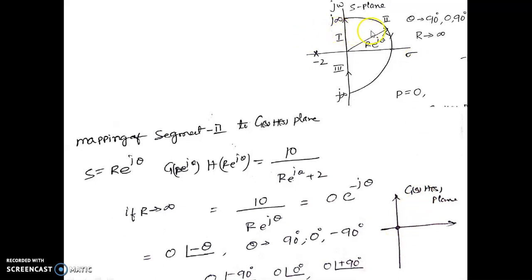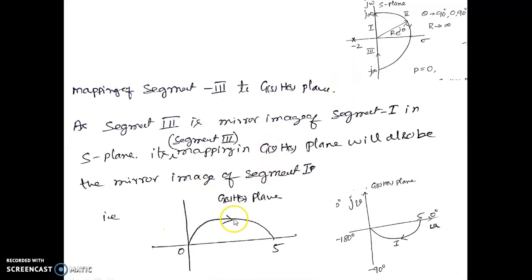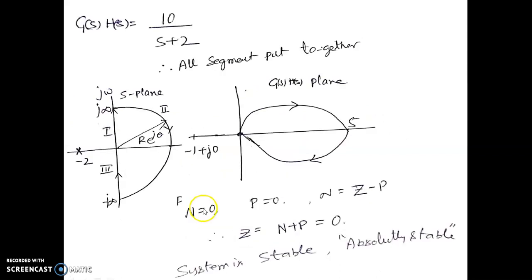For the third segment, it is exactly the mirror image of the first segment. We do not need to solve it separately—whatever mapping exists for segment 1 will be mirrored for segment 3. You can see segment 3 goes upward while segment 1 goes downward. So once all three segments are mapped, the complete Nyquist plot for this transfer function consists of the first segment going from minus 5 to 0 downward, a dot at the origin for segment 2, and the mirror image for segment 3.